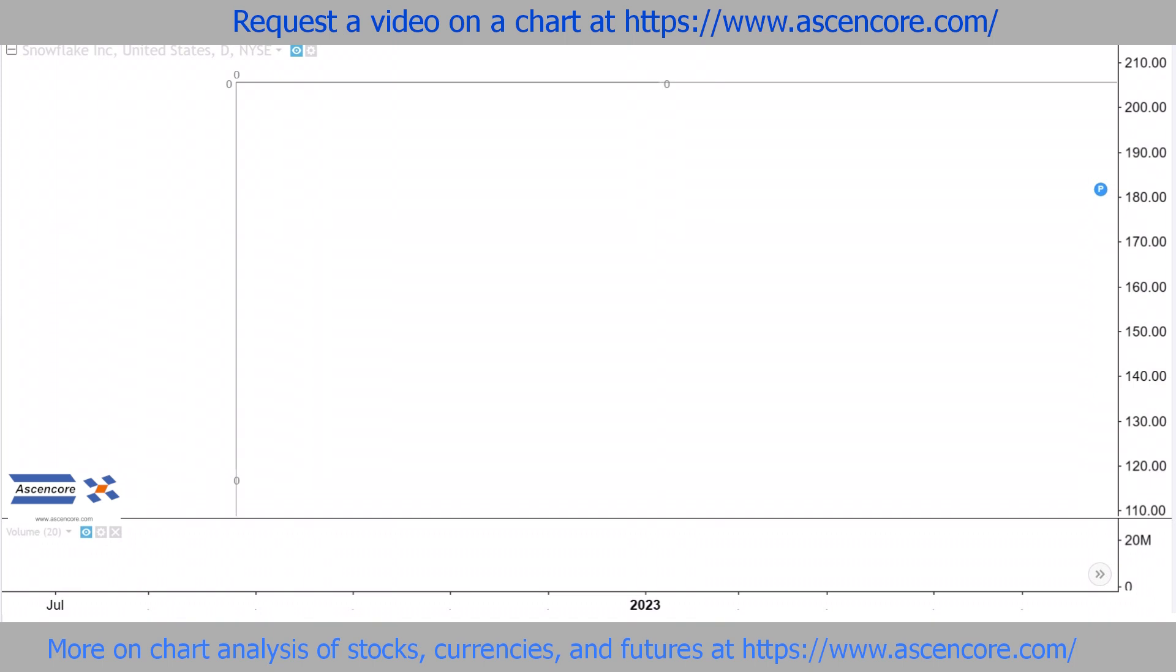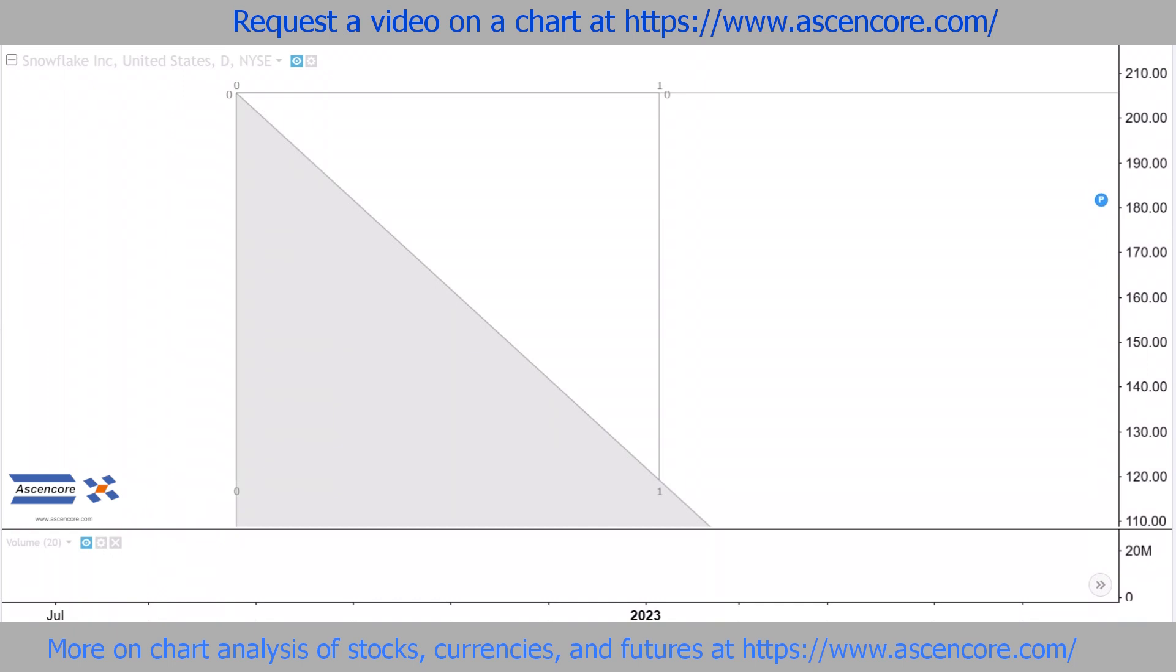The main outline of a Fibonacci speed resistance fan begins with a horizontal and vertical ray. These all have values of 0. It then extends to 1 to form a box, which will be the outline of the fan's grid.